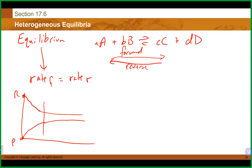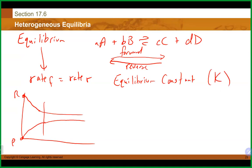On the large scale it may appear that nothing is happening at equilibrium, but on the molecular level there is a lot of activity — reactants going to products and products going to reactants. There is a relationship used with these reactions known as the equilibrium constant.